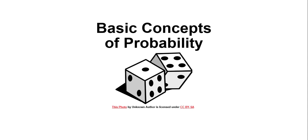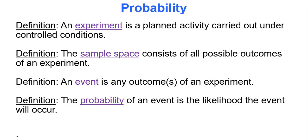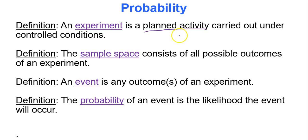When we say probability, we're referring to the likelihood that an event will happen. In order to get to calculating probabilities, there are a few key vocabulary words we should know about. First off, an experiment is a planned activity that's carried out under controlled conditions. For instance, an experiment could be flipping a coin, rolling a dice, or pulling a card from a deck of cards.